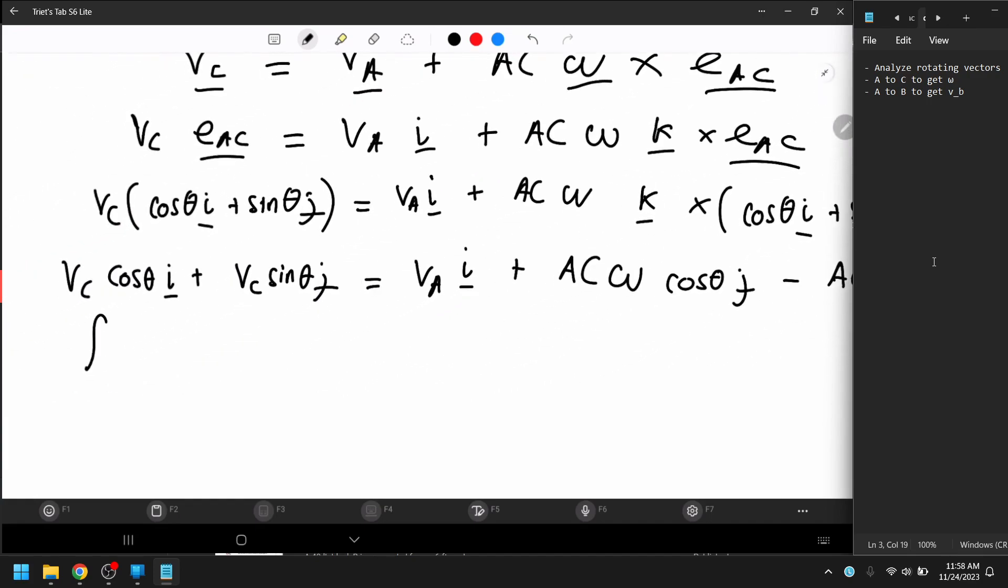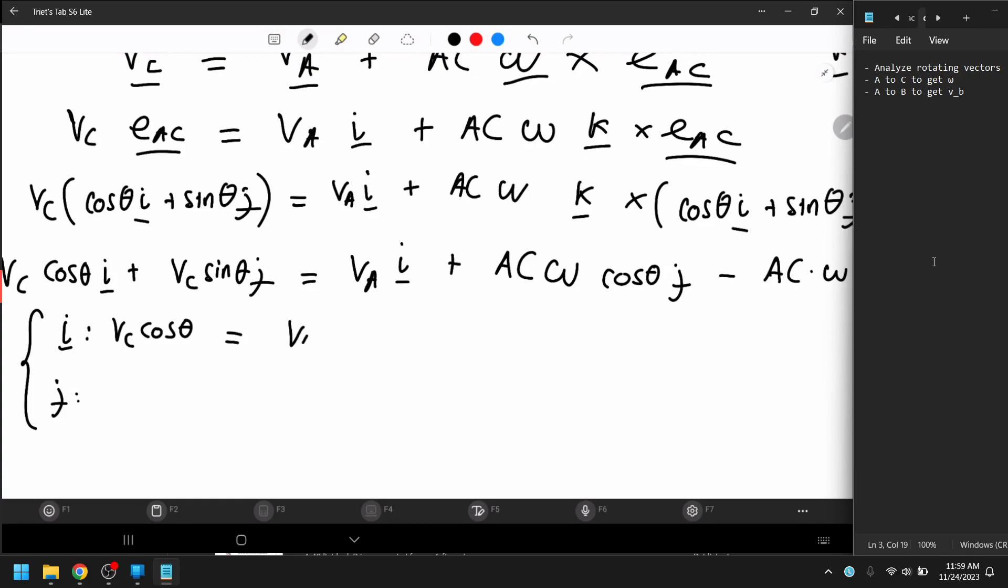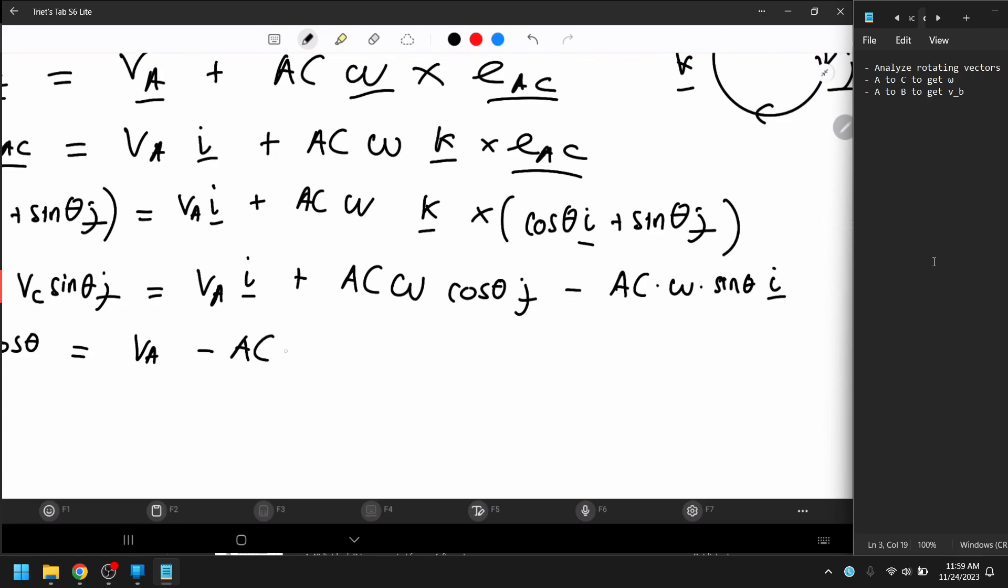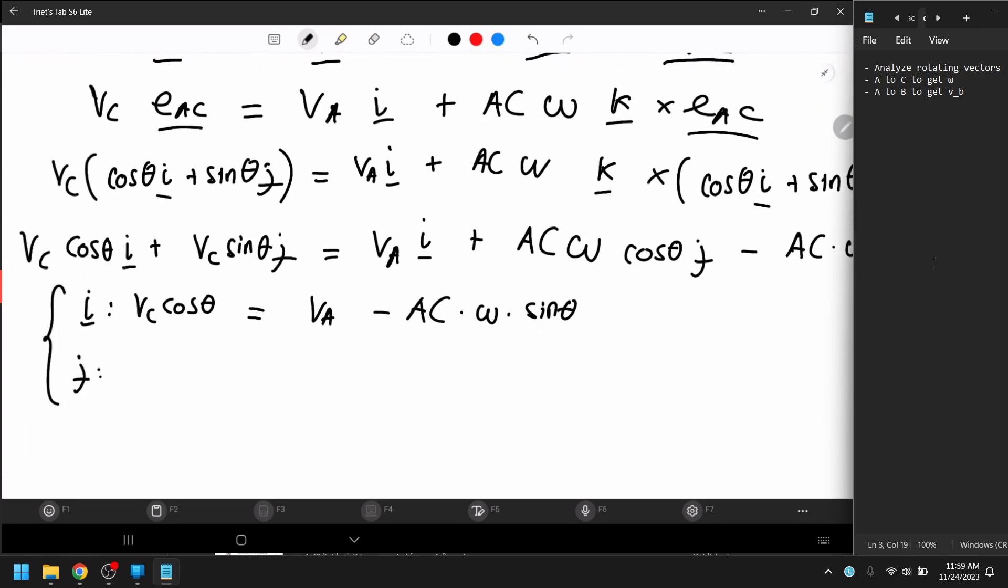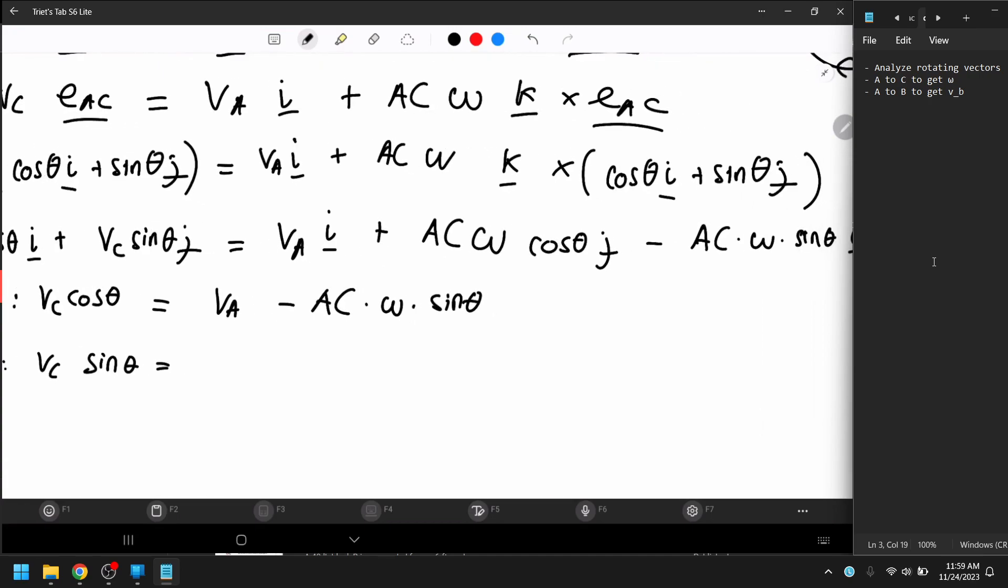And from this, you're going to have two equations, one in the i direction, one in the j direction. In the i direction, we have V_C cos theta, equal to V_A in the i direction. Then, negative AC omega sin theta. In the j direction, you have V_C sin theta, equal AC omega cos theta. In the j direction. Okay.